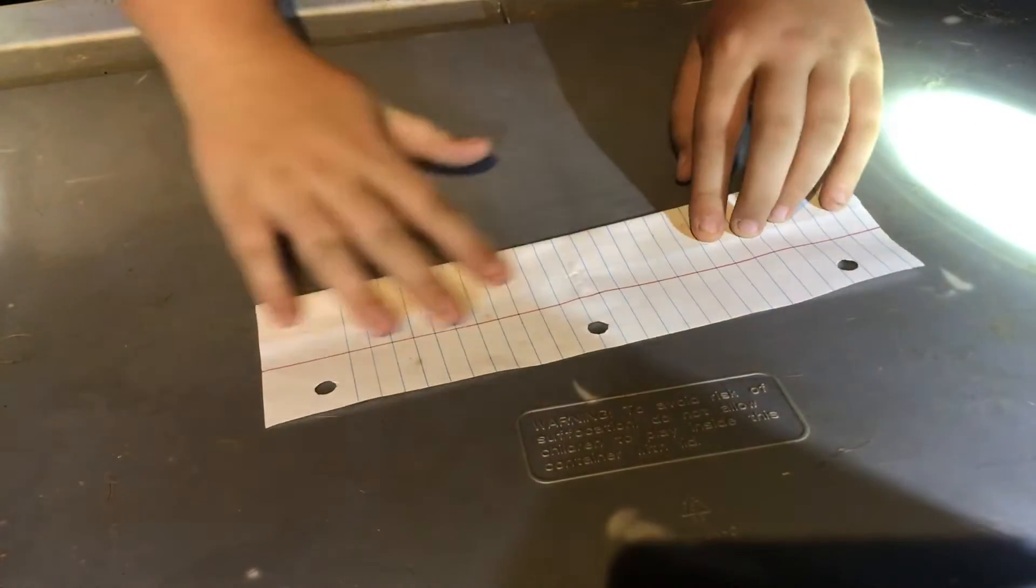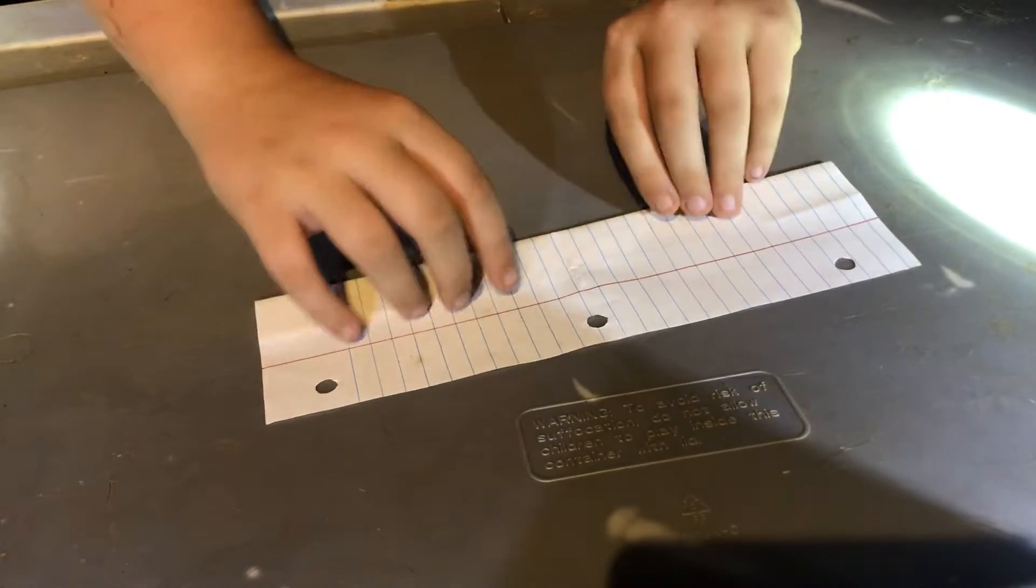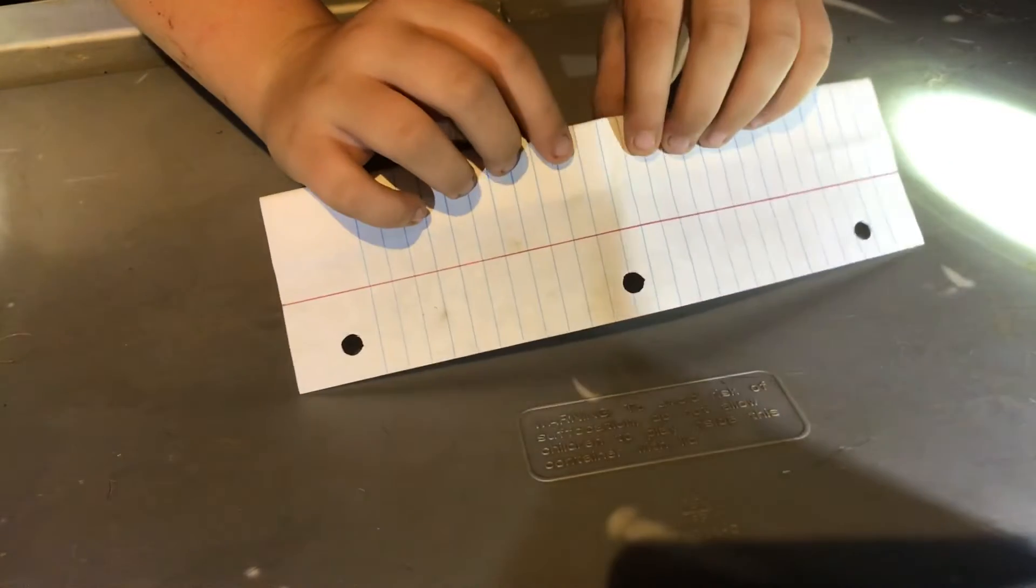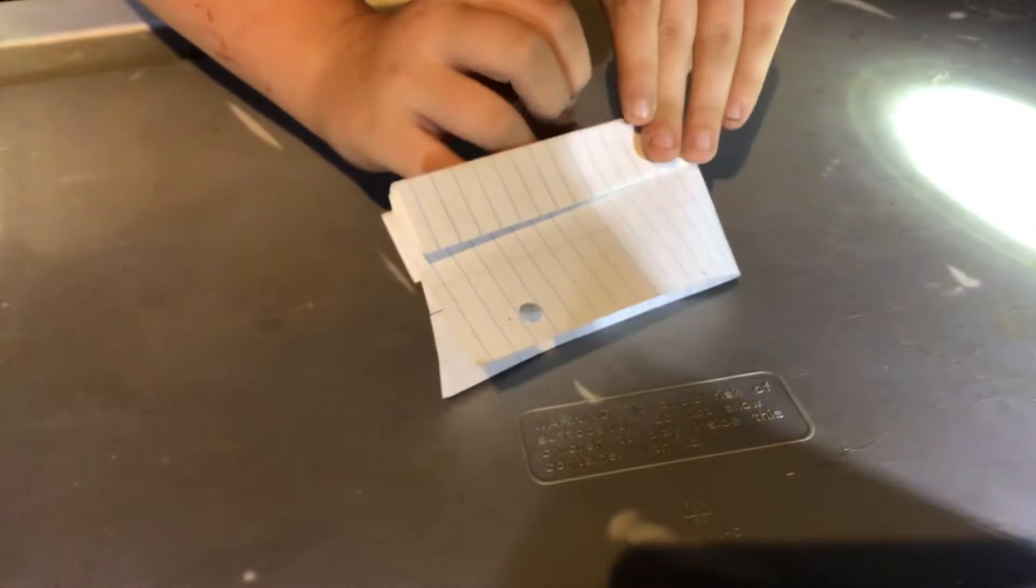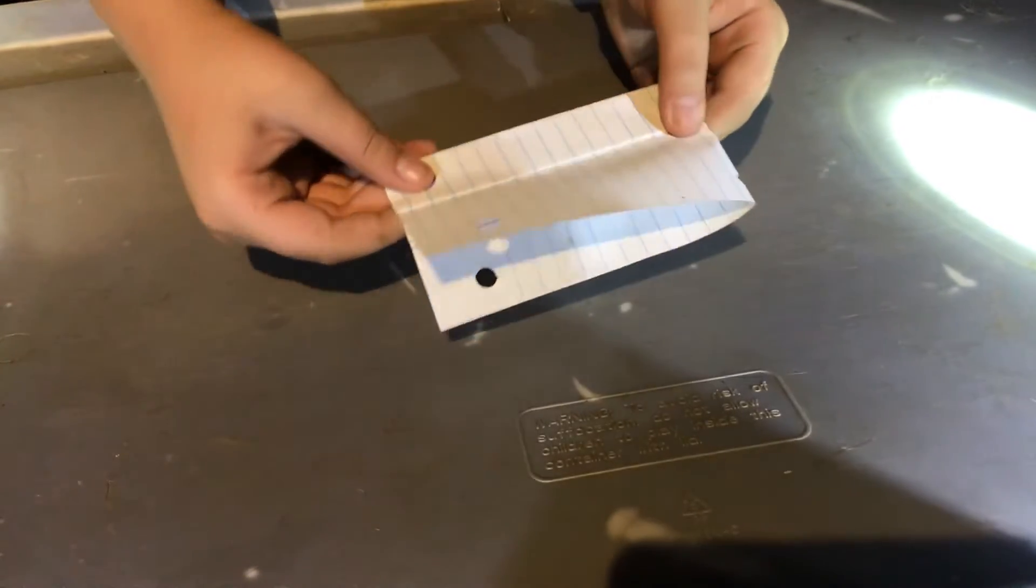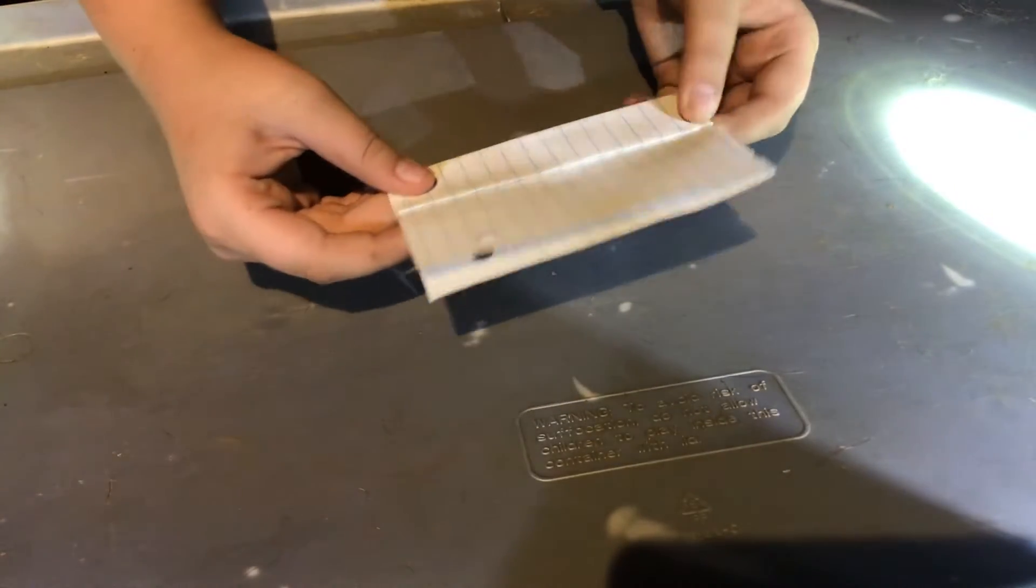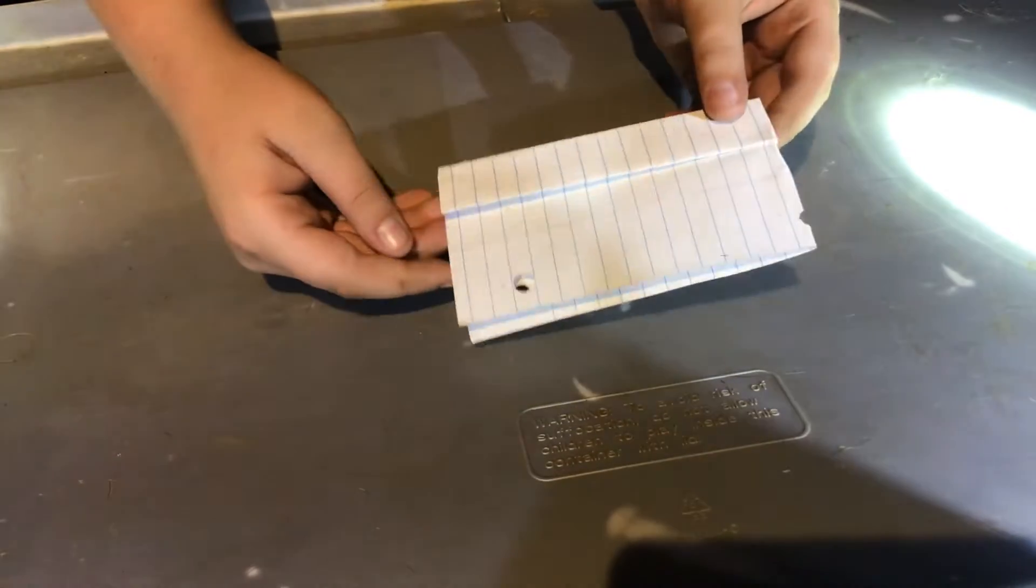The next thing you're going to want to do is flip your paper over to where the bar is on the backside. Then you're going to take your paper and fold it where the bar is on the outside. You're going to fold it in half just like this. Make a little crease right here at the closed end.